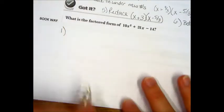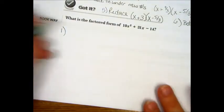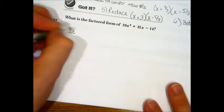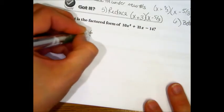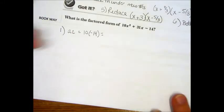Step number one on the book way is to combine A and C. So A times C in this problem is 10 times negative 14, which is negative 140.